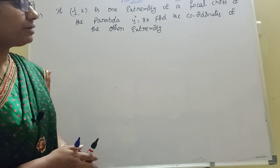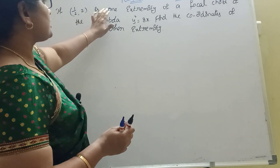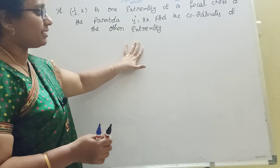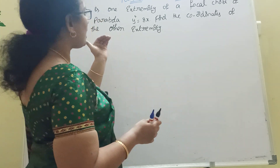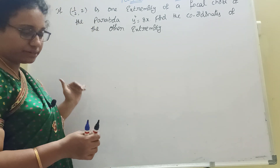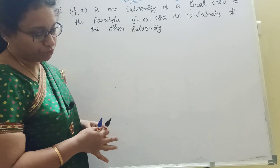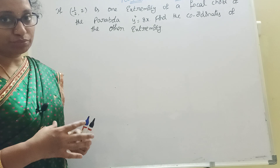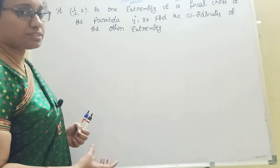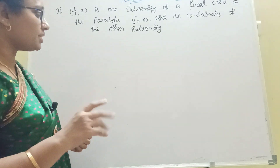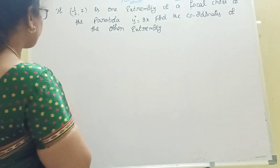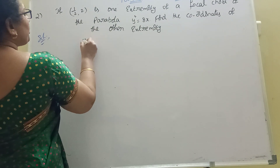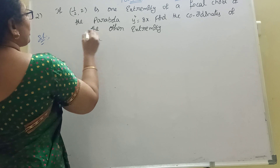Second problem: if (1/2, 2) is one extremity of the focal chord of the parabola y² = 8x, then find the coordinates of the other extremity. Extremity means the other endpoint — we need to find it. This is a 2-mark problem and the formula makes it easy; we will get it in only four steps.